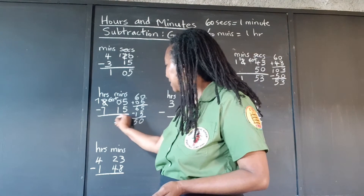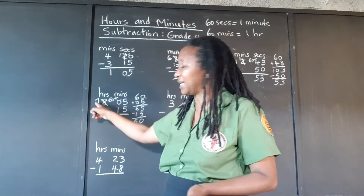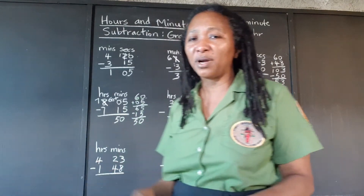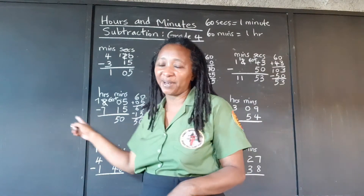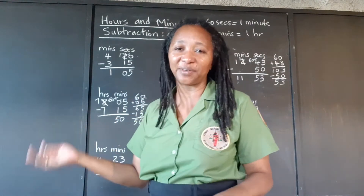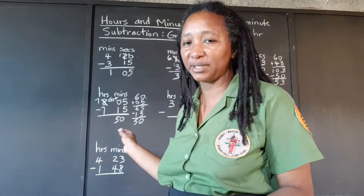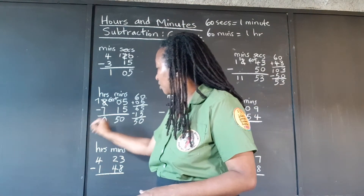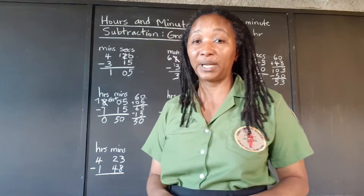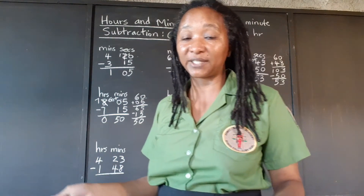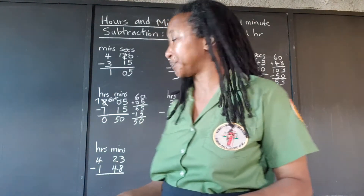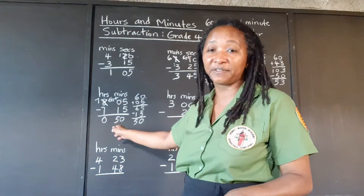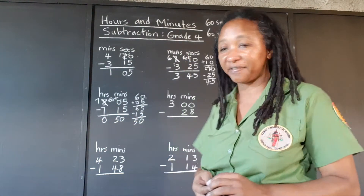50 minutes, and 7 take away 7 is 0. Some persons will write the 0; if your teacher wants you to put the 0 there just to hold that place, go ahead — it doesn't make a difference. So the answer is no hours and 50 minutes remaining.